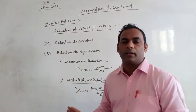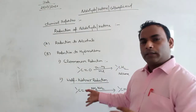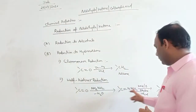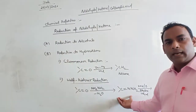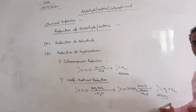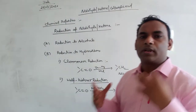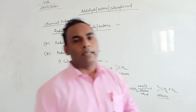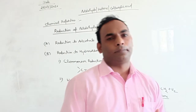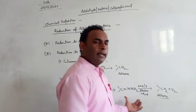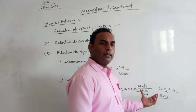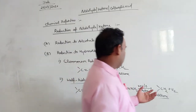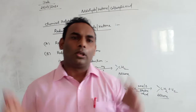The next one is Wolff-Kishner reduction, which is also a very important reaction. In this reaction, the carbonyl group is reduced — first we get an intermediate, and then the final product is alkanes. Hydrazine (N2H2) is the Wolff-Kishner agent. After forming the intermediate, it is heated with sodium hydroxide and ethylene glycol, and we get alkanes.